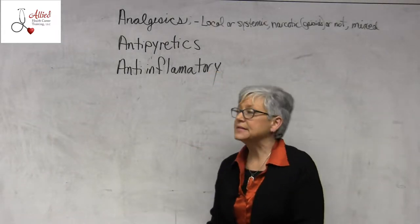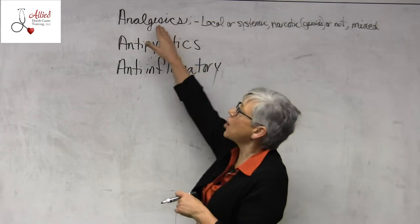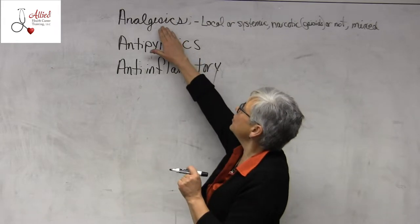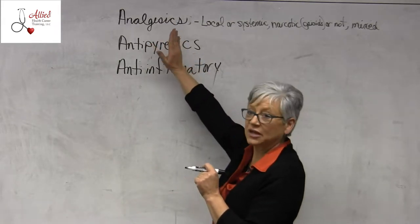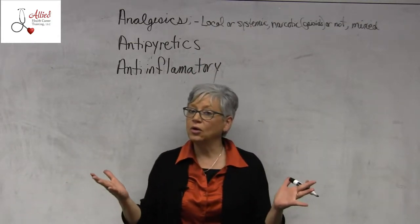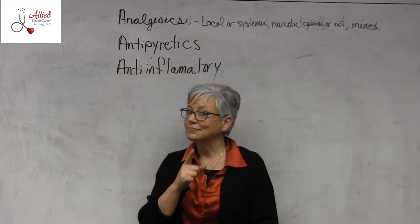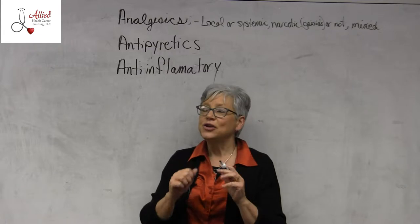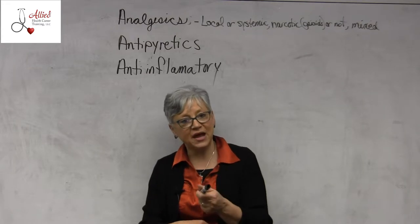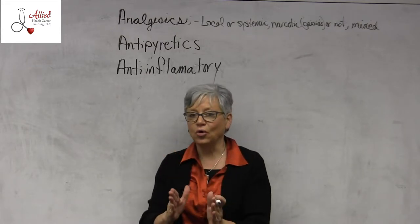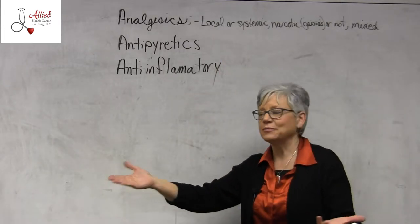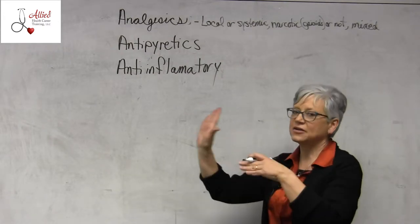We're talking about analgesics. Analgesics are pain relievers — that's it, just pain relievers. There can be different types of pain relievers; they can be local or systemic. An example of a local analgesic would be a pain cream that you rub on, or a lidoderm patch. Those would be local analgesics. Or they can be systemic, like Tylenol — something you swallow that goes through your bloodstream to the site of action.